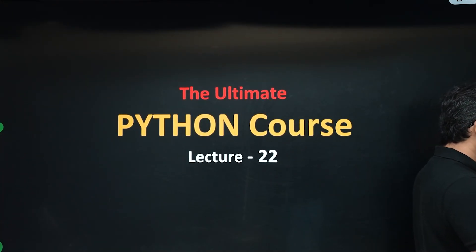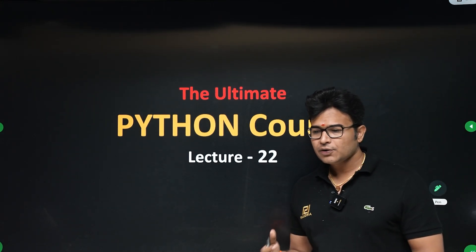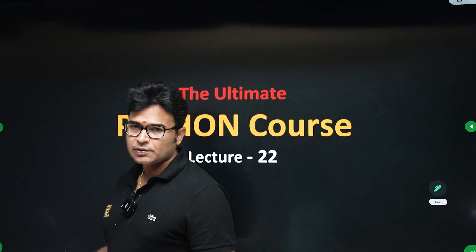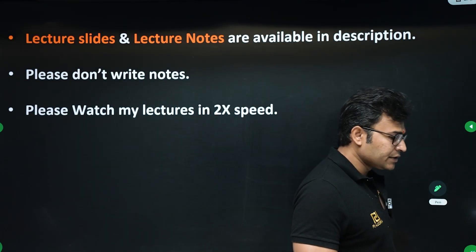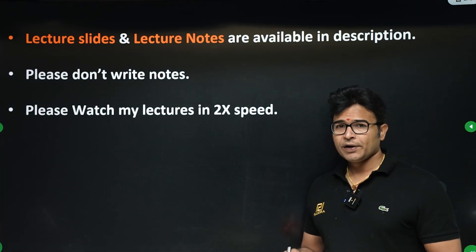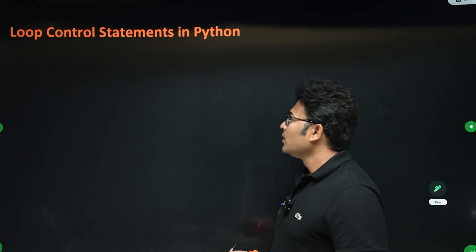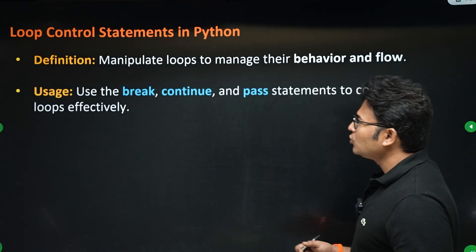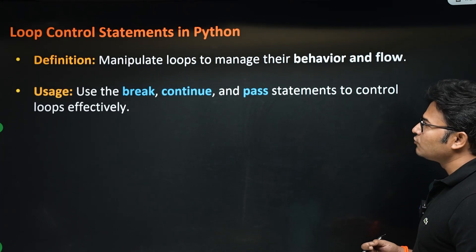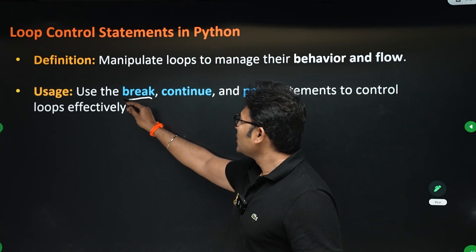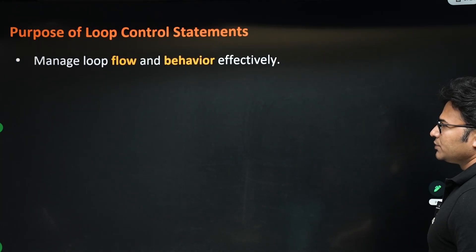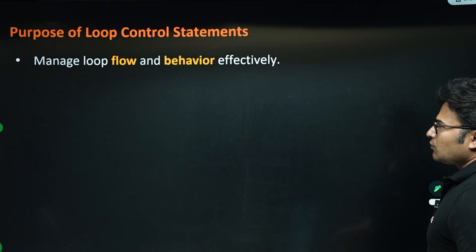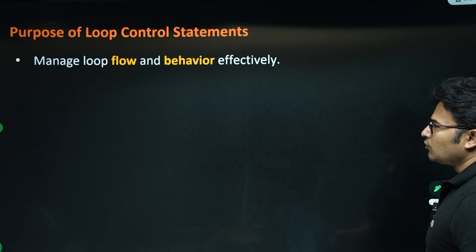Welcome to lecture 22 of the Ultimate Python Course. You already know how to write loops; now we want to control loops based on some condition. So what are the loop control statements? When you want to manipulate loops and change their behavior and flow, you can use three things: break, continue, and pass.